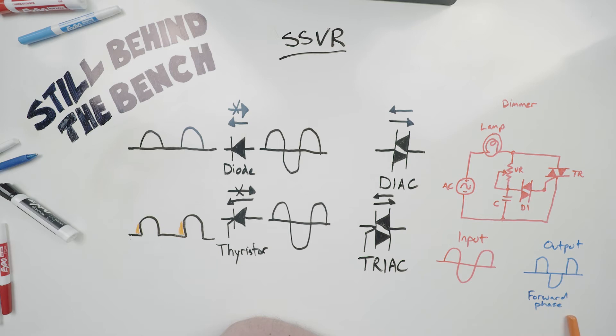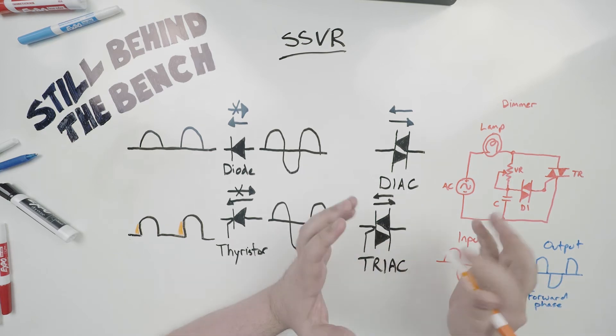And that's why this is called a forward phase circuit. You can make reverse phase circuits, they chop off the back end, they are a lot safer to use with sensitive electronics.